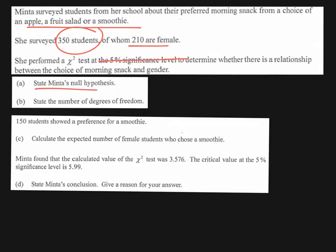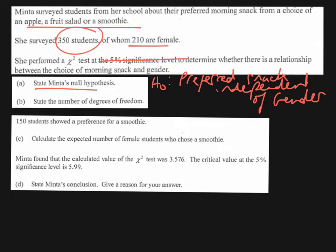The null hypothesis is always that there is no relationship. So here it would be that preferred morning snack is independent of gender. And therefore H₁, which we're not actually asked to put here, but if we were, is that preferred snack is not independent of gender.